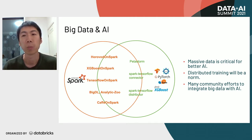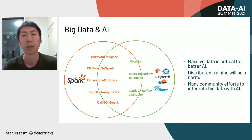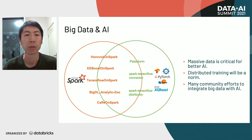One reason is because massive data is actually very critical for better AI. The model is important. However, to get better AI, we actually need a large number of high-quality data. And with more data being used in training and the model becoming more complex, a single node actually cannot meet the computing requirements. So it's obvious that distributed training will be a norm.